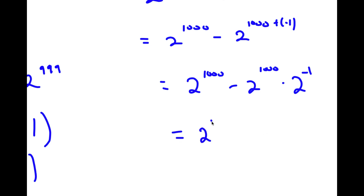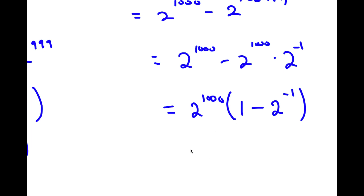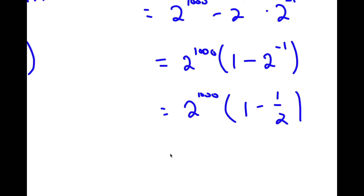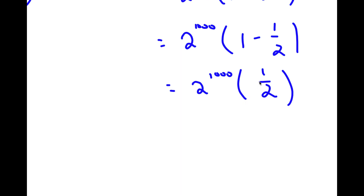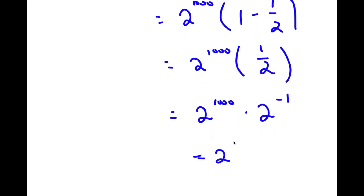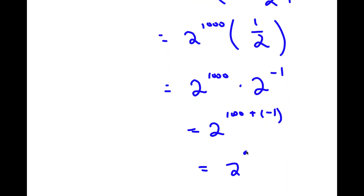If I factor out 2 to the power of 1000, I get 2 to the power of 1000 times 1 minus 2 to the power of negative 1. This is equal to 2 to the power of 1000 times 1 minus 1 half, which equals 1 half. So I have 2 to the power of 1000 times 1 half, which is the same thing as 2 to the power of negative 1. So 2 to the power of 1000 times 2 to the power of negative 1 equals 2 to the power of 1000 plus negative 1, which is 2 to the power of 999.